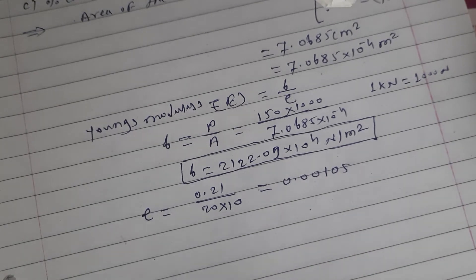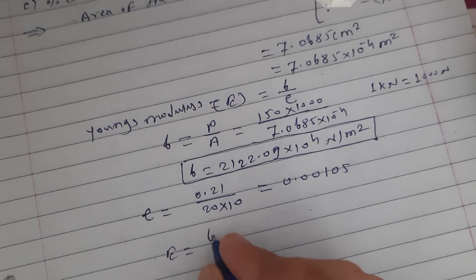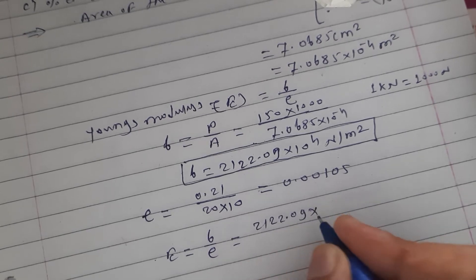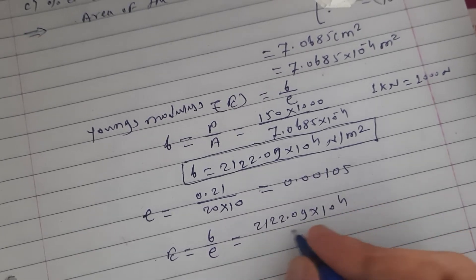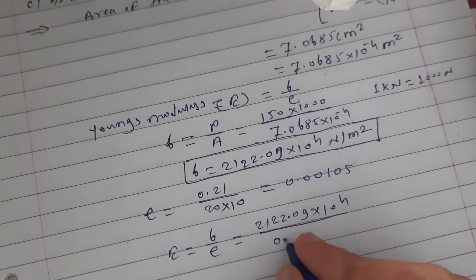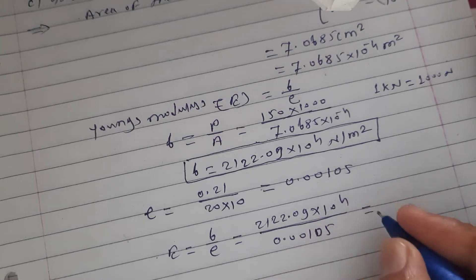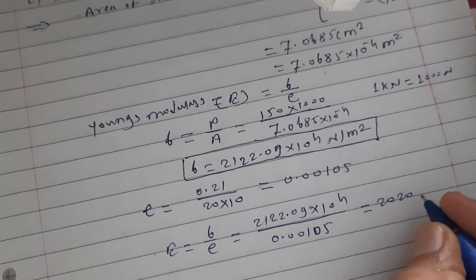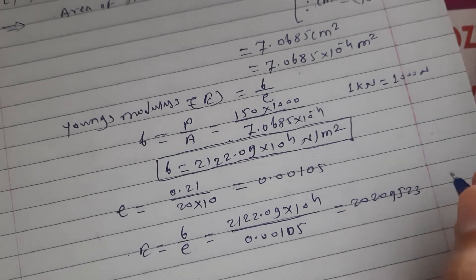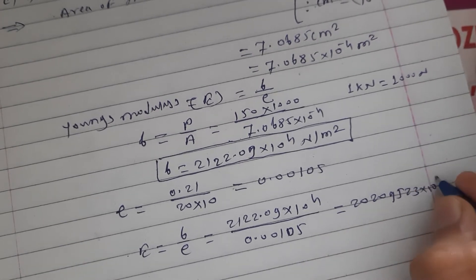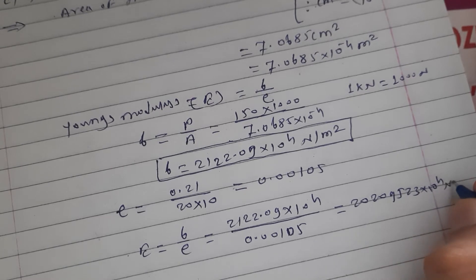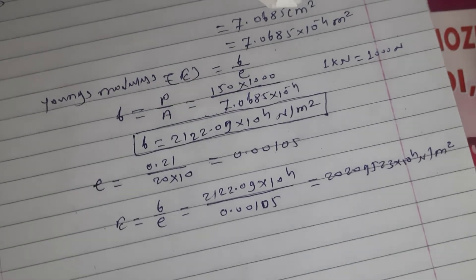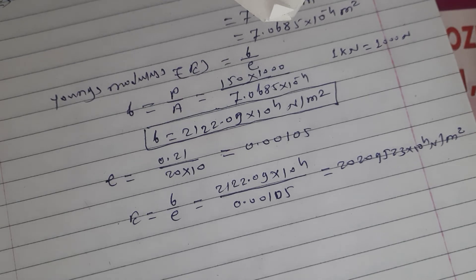Then E equals sigma upon strain: 2122.09 into 10 raised to 4 divided by 0.00105. You get Young's modulus as 202.0952 into 10 raised to 4, which gives 10 raised to 9 — so the unit is giga newton per meter square. This is your answer for Young's modulus.